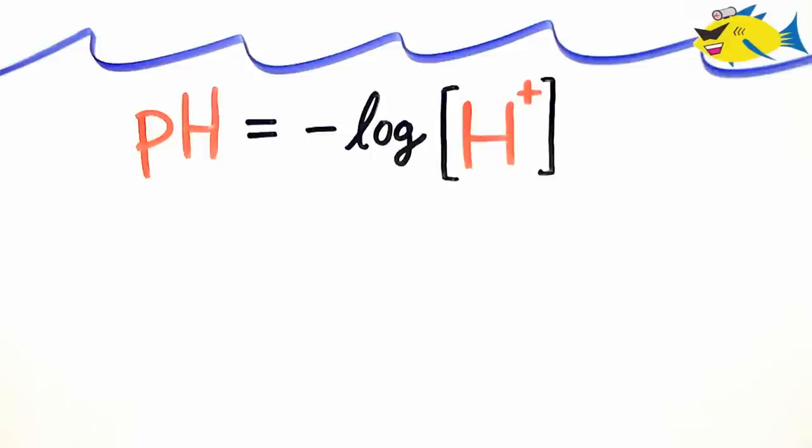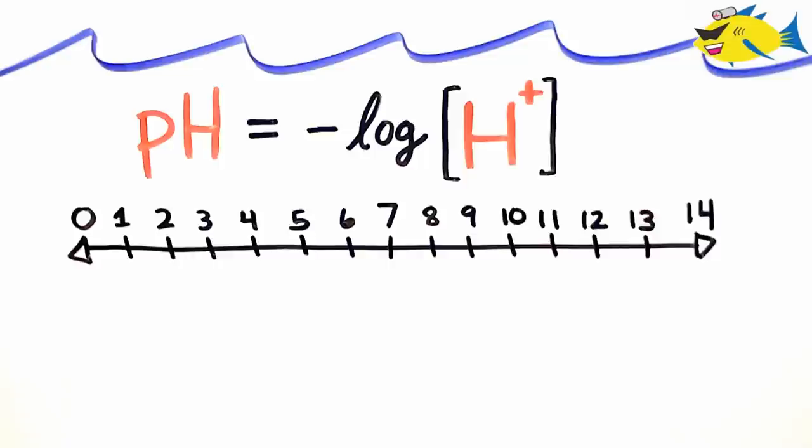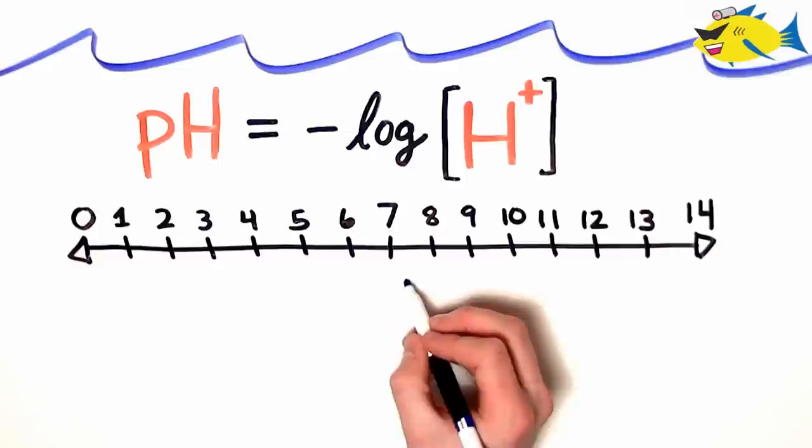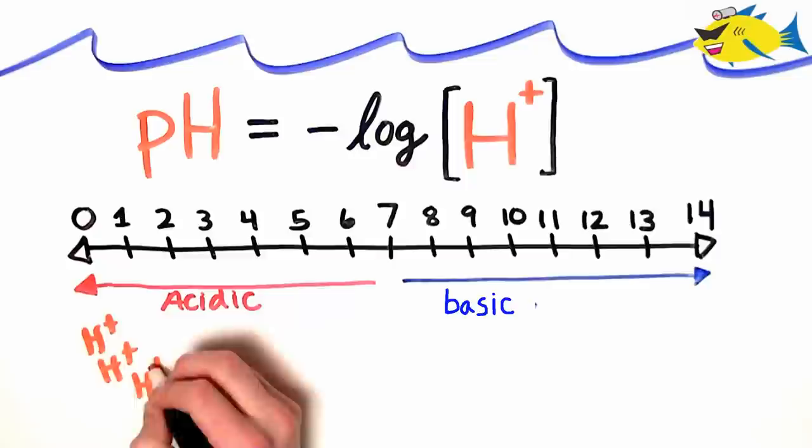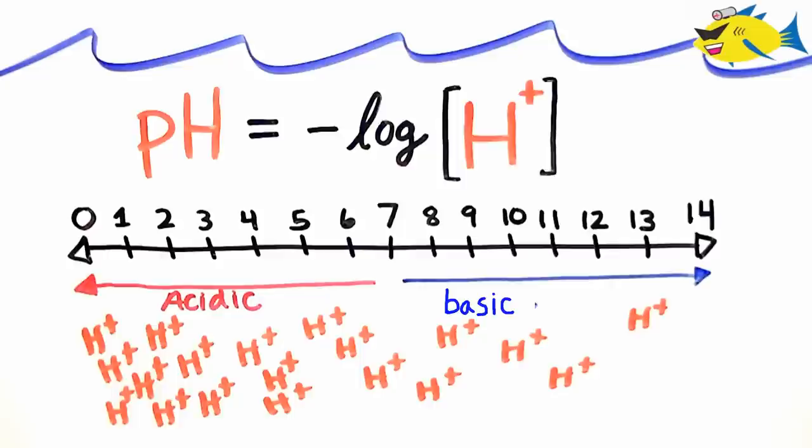pH values are represented on a scale ranging from 0 to 14, with 7 representing neutral. Any number less than 7 is acidic, and any number greater than 7 is basic. The lower we go on the scale, the more hydrogen ions we have in solution, and vice versa. In our aquarium,